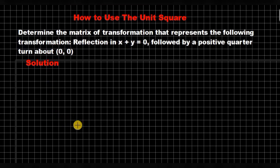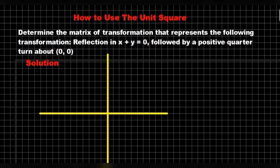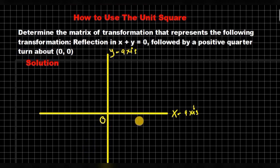Before we continue, the first thing I want us to do is to describe the unit square. On the Cartesian plane, this is the x-axis and this represents the y-axis. If this is the origin, then the unit square is a square on the Cartesian plane whose dimensions are a unit. Consider this point as point (1, 0) and let's label it i, where i represents a unit vector in the x-direction.